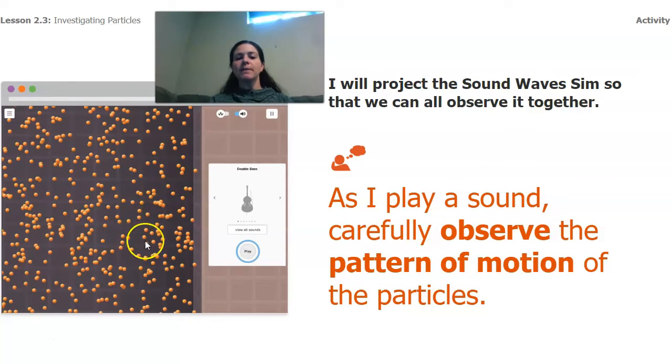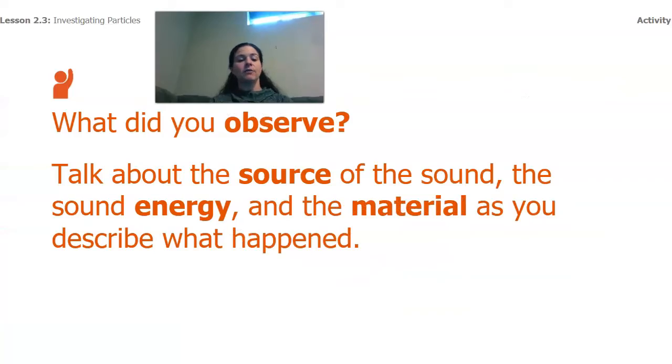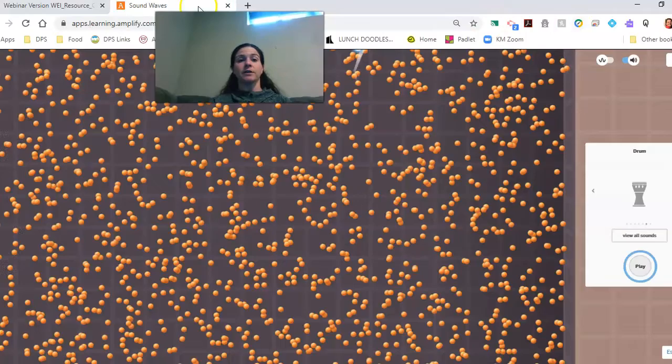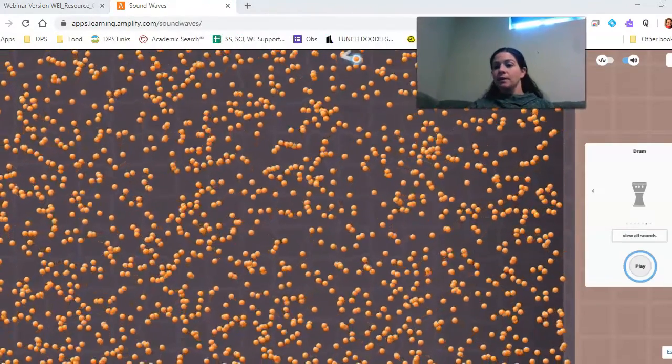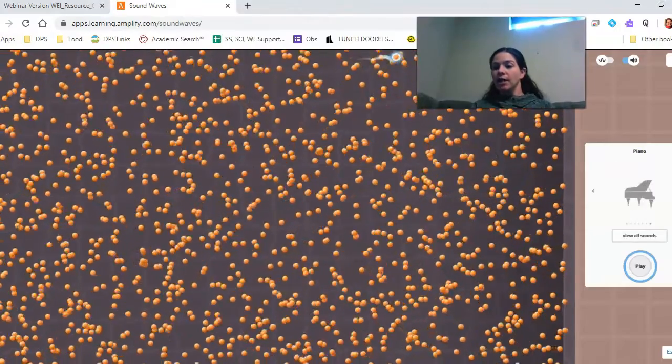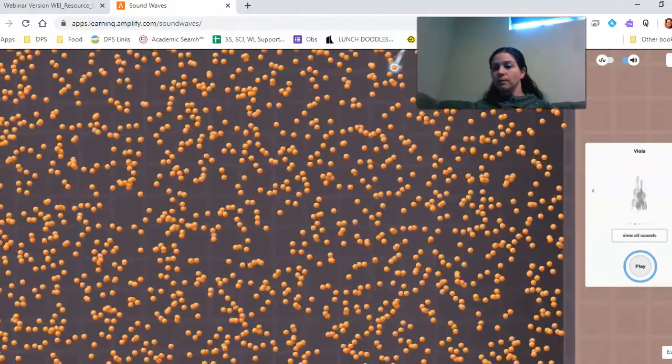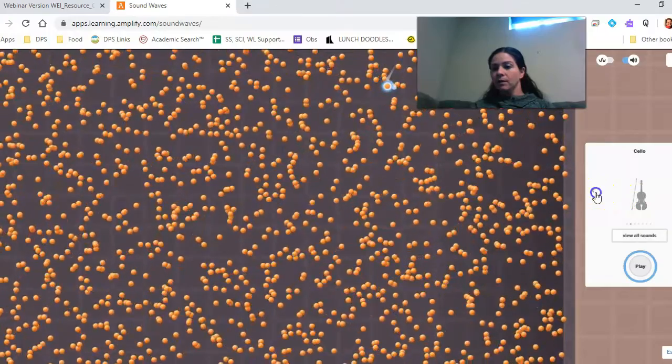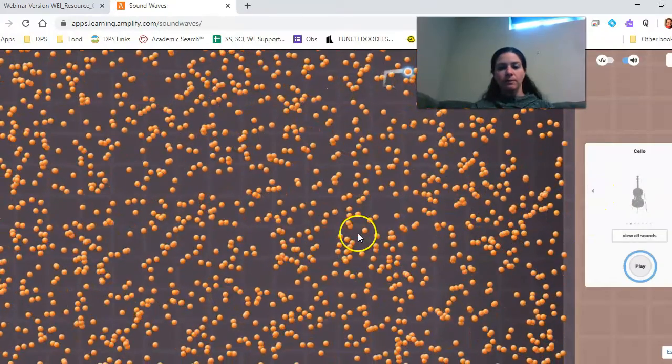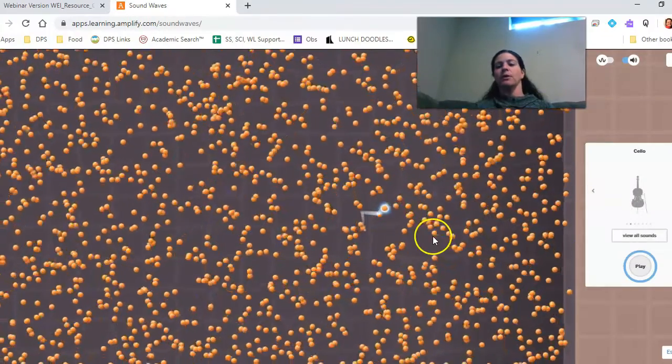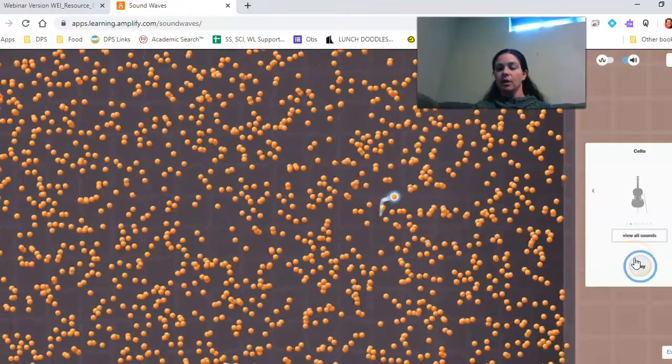So I'm going to play a sound, and I want you to keep an eye on the pattern of motion of the particles. We're going to see if we can identify some patterns that are happening. So let's go ahead and change to—I don't know if we've done a cello yet. I'm going to actually pick a different particle, one kind of in the middle. And let's go with the cello.